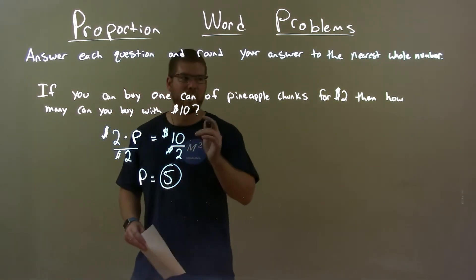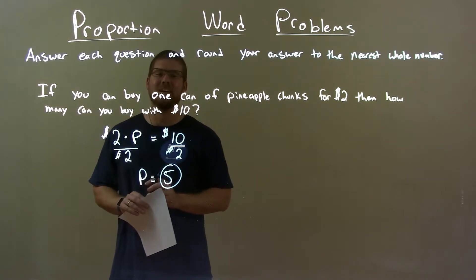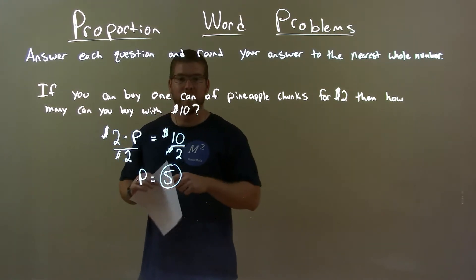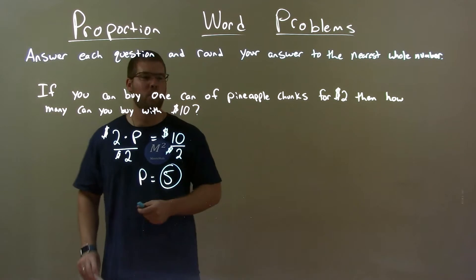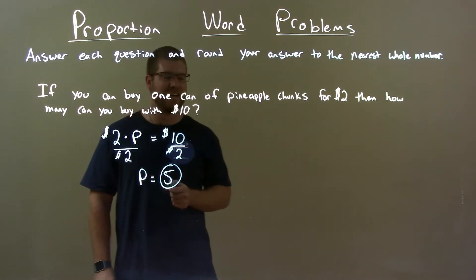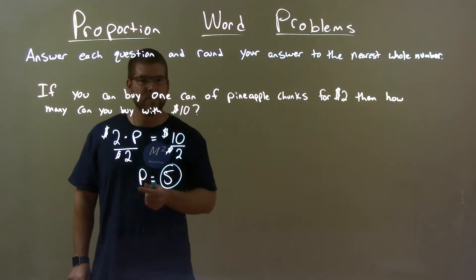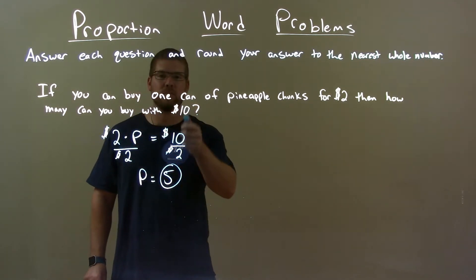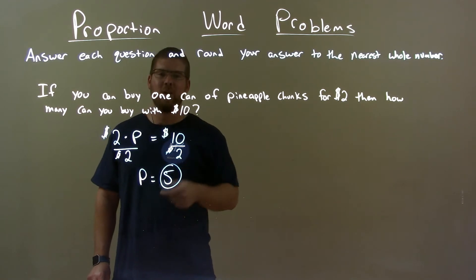We can buy 5 pineapple chunks with $10. So quick recap: if you can buy one can of pineapple chunks for $2, then how many can you buy with $10? We set up an equation with that, $2 times P equals $10, and solve for P and got P equal to 5, our final answer.